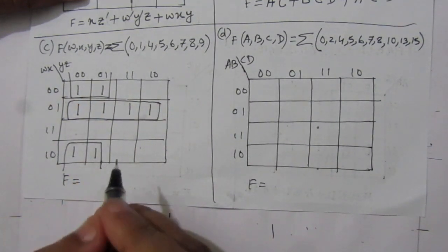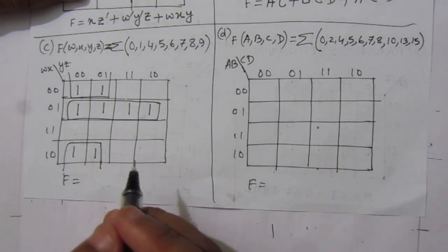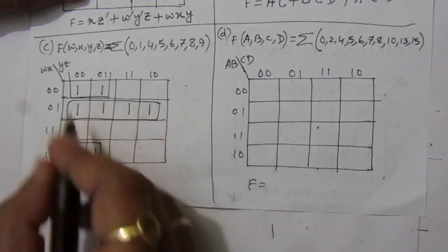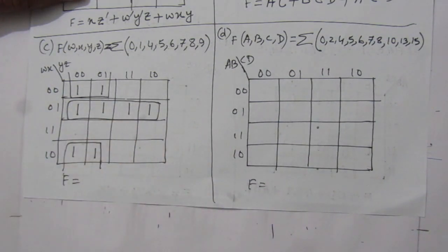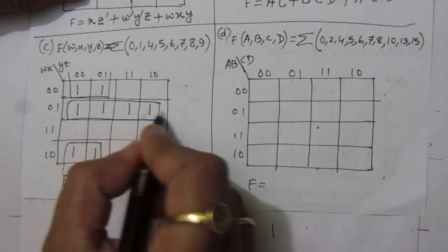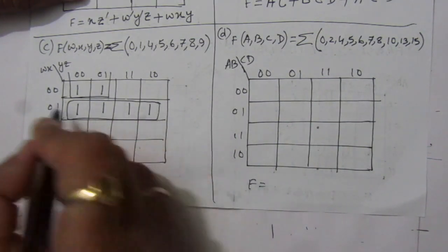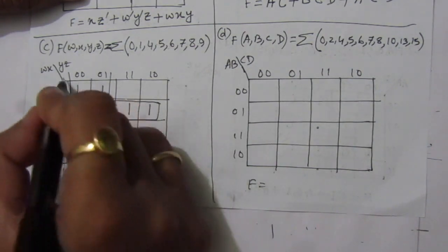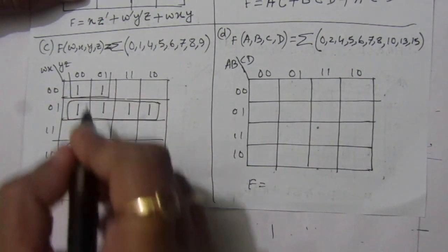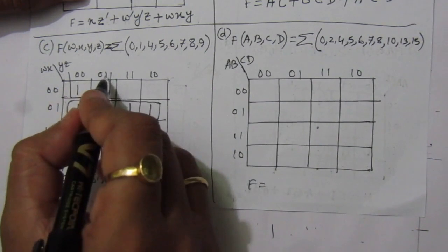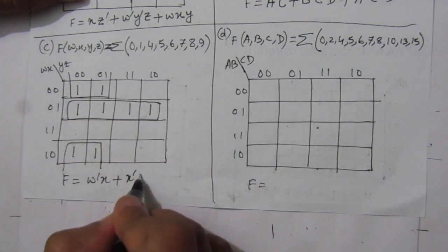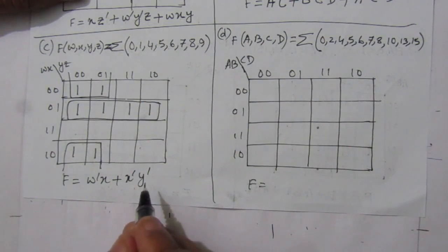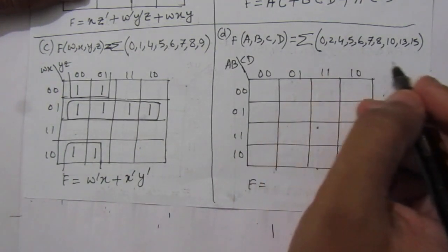We need to select groups to minimize the number of terms while maximizing the values combined. From the first selection we get w̄x, and from the second combination we get x̄ȳ. So the simplified Boolean expression for the third part is w̄x + x̄ȳ.